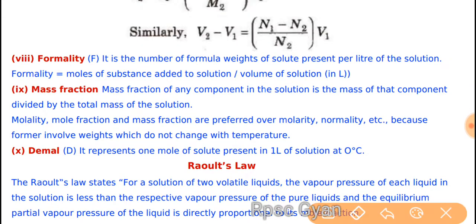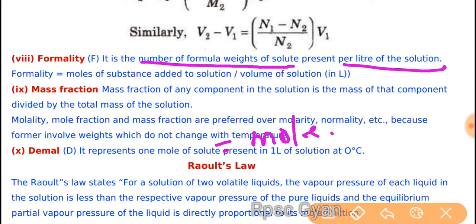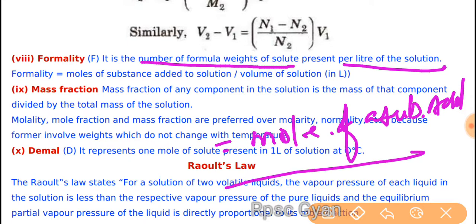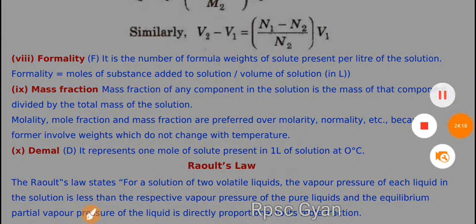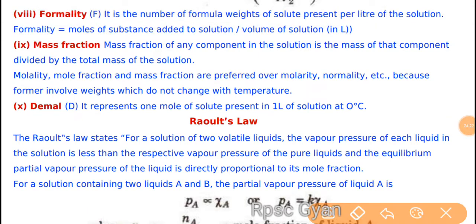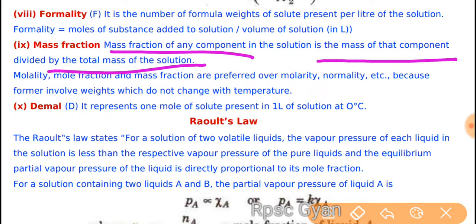Formality: it is the number of formula weight of solute present per litre of solution. Formality = moles of a substance added to the solution upon the volume of solution in litres. Mass fraction of any component in solution is the mass of that component divided by total mass of solution.